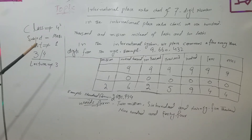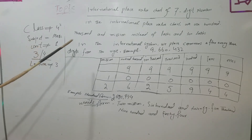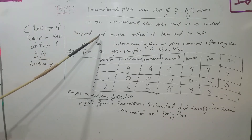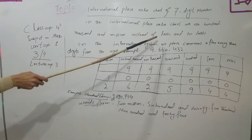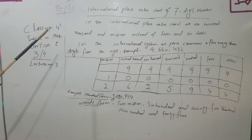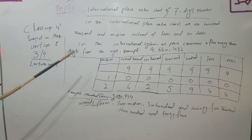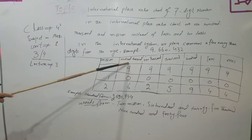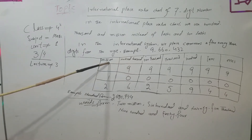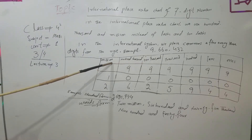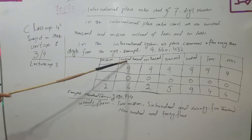In the International Place Value Chart of 7-digit numbers, we use 100,000 and million instead of lakhs and 10 lakhs. In the Pakistani place value system we use lakhs and 10 lakhs, but in the International Place Value Chart we use 100,000 and million. So 1 lakh equals 100,000, and 10 lakhs equals 1 million.